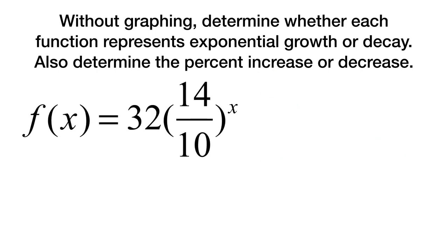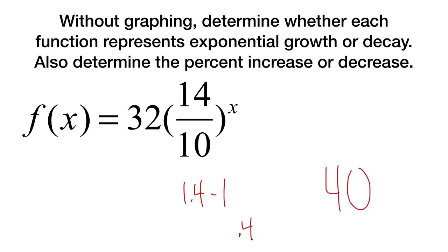Here's our last one: 14 over 10. I'm going to rewrite that as 1.4, the decimal version. Subtract one — that gives us 0.4, or forty percent. And that is growth.